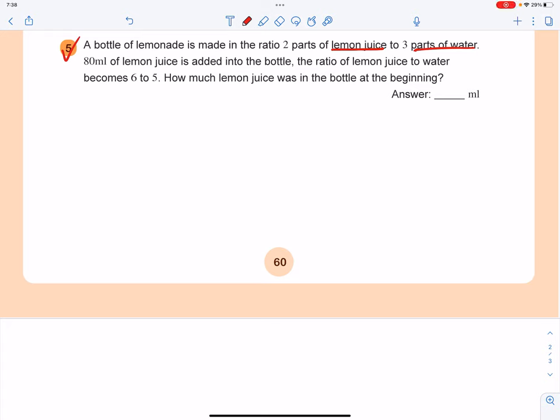Homework question number 5 in lesson 14. A bottle of lemonade is made in the ratio 2 parts of lemon juice to 3 parts of water. 80 ml of lemon juice is added into the bottle, the ratio of lemon juice to water becomes 6 to 5. Then how much lemon juice was in the bottle at the beginning?